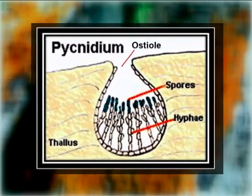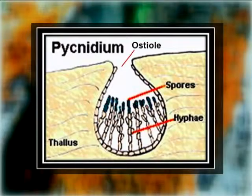Sporulation is another kind of asexual means of reproduction in lichens. In this method, the fungal partner produces small, non-motile asexual spores known as pycnidiospores. These are produced in special flask-shaped cavities called pycnidia. Each pycnidium opens to the surface through a small pore called an ostiole. The wall of the pycnidium consists of sterile hyphae. The pycnidiospores on germination produce fungal hyphae, which after coming in contact with an appropriate alga develop further into a new lichen.